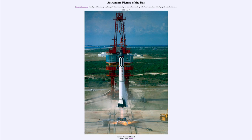Today's picture is titled Mercury Redstone 3 Launch. Here we have, just about 60 years ago on May the 5th of 1961, the flight of Freedom 7, which is the capsule at the very top of this rocket. The darker area up there contains the capsule.